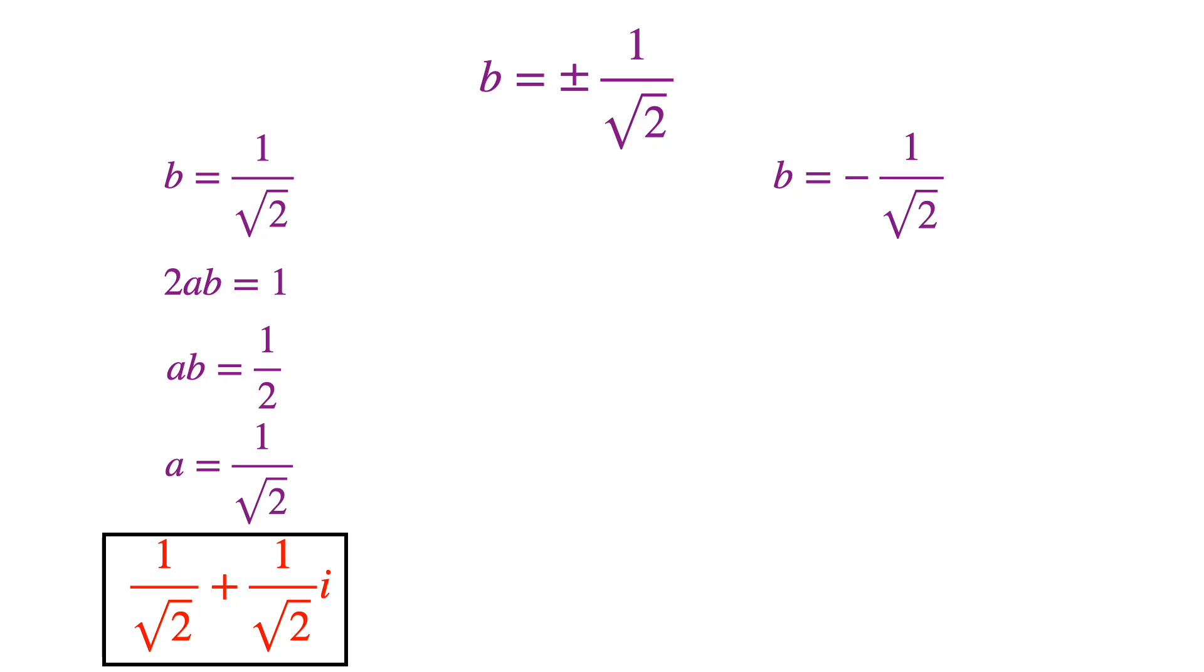Now if b is minus 1 over the square root of 2, by a similar argument, we'll get that a is also minus 1 over the square root of 2. And we get another answer. So we get two answers for the square root of i. And that's it, and thanks for watchin'.